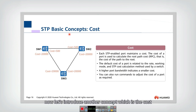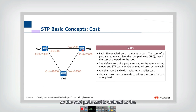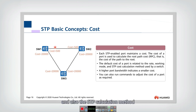Now let's introduce another concept: cost. Each link has a cost, and there is a root path cost. The root path cost is defined as the cost of the path to the root. The default cost of a link is related to the data rate of the link, the working mode, and the STP calculation method.